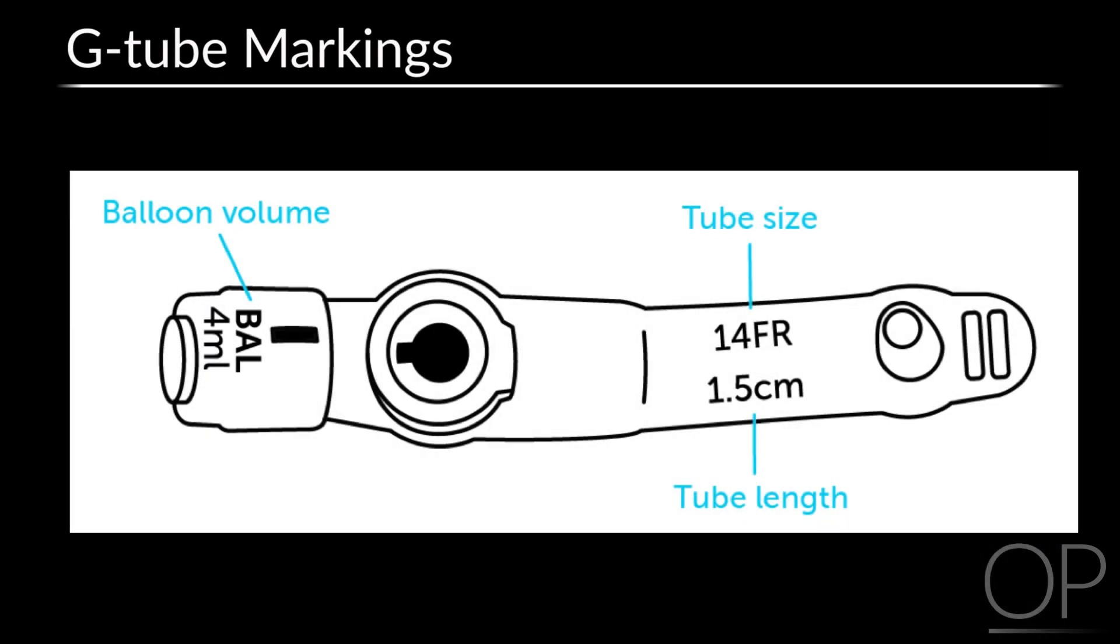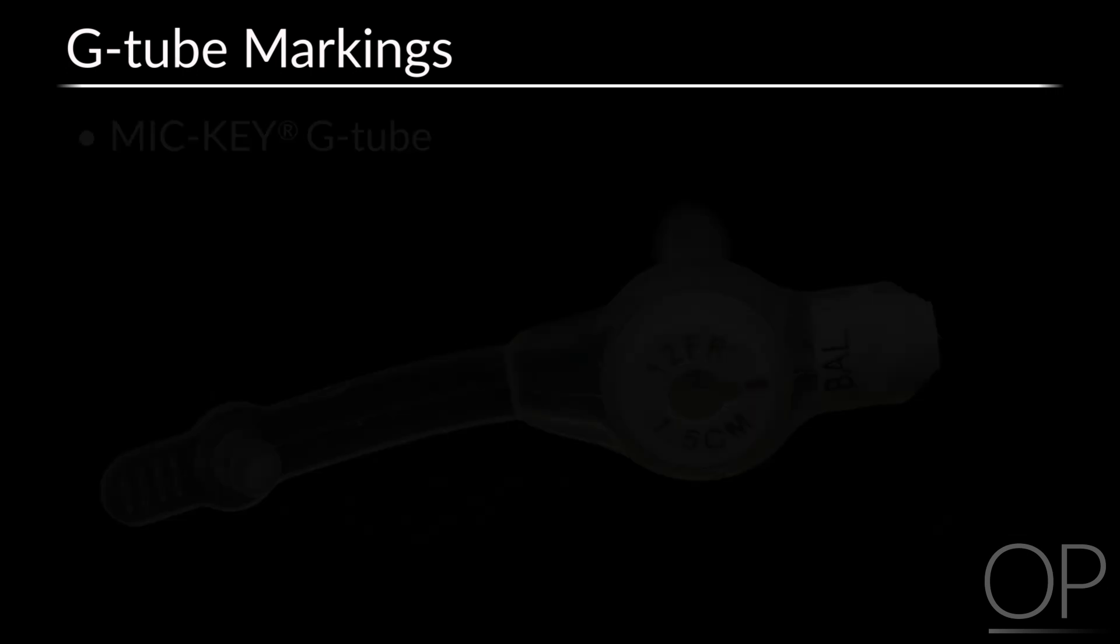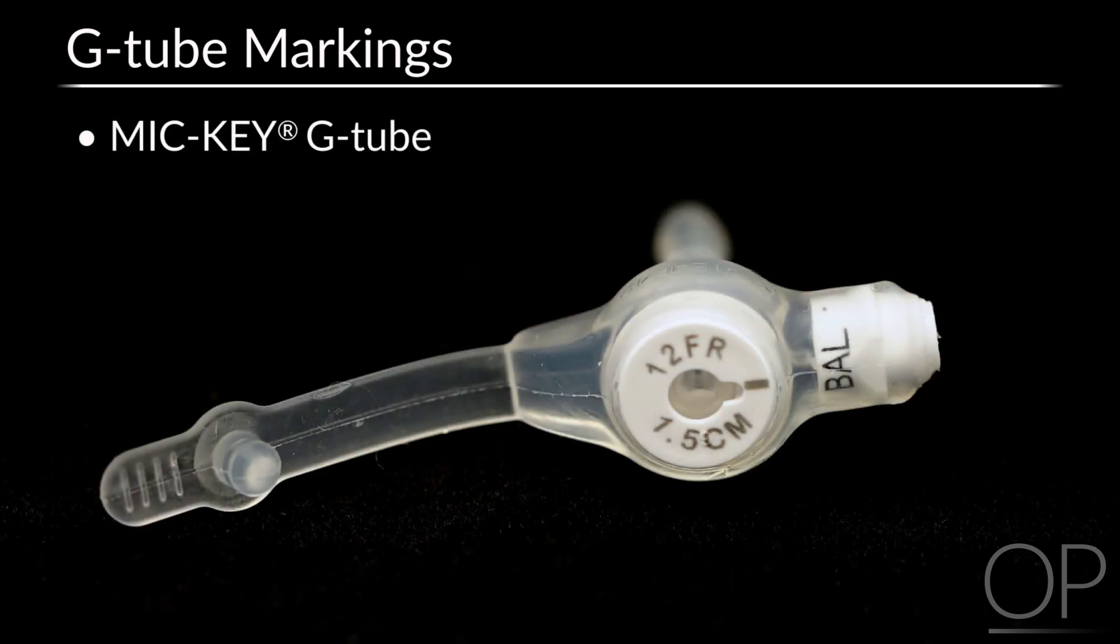The G-tube diameter, length, and balloon fill volume frequently appear on the external base of the tube as shown in this figure. However, not all tubes are marked in the same fashion. For example, this MICI G-tube displays only the diameter and tube length.